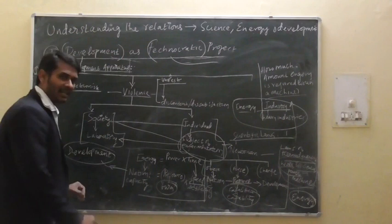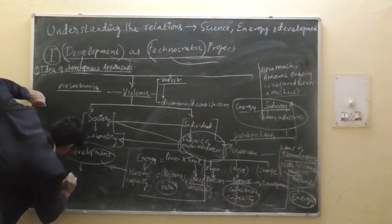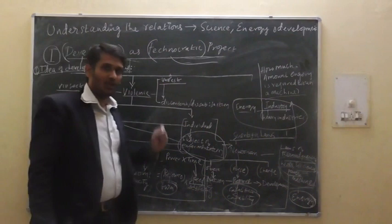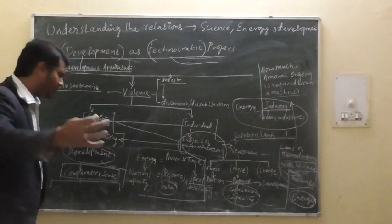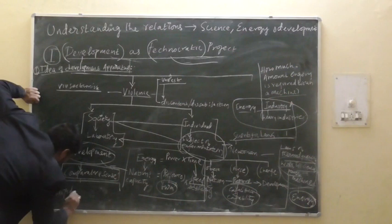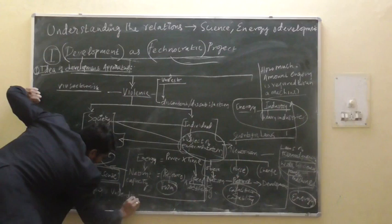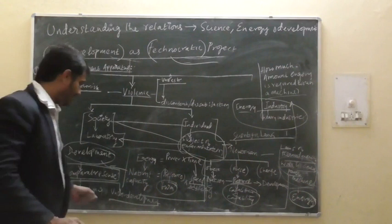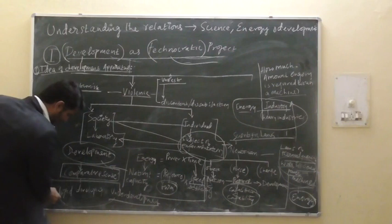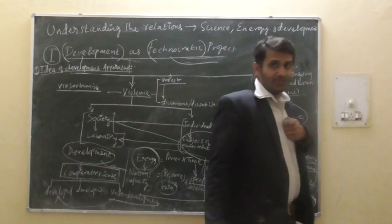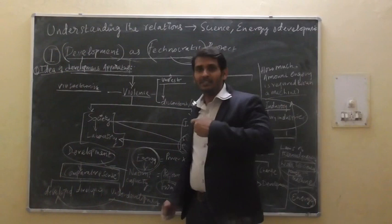Development in terms of a comparative sense means you try to create different sets of worlds: developed and underdeveloped. When a nation-state is located at the underdeveloped position, it wants to reach the position of the developed. To realize that, it has to understand the notion of energy — how much energy should it have so that it will be able to reach the position of the developed.